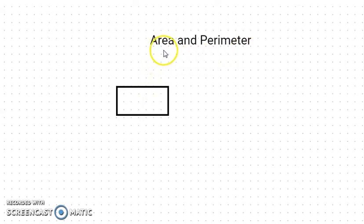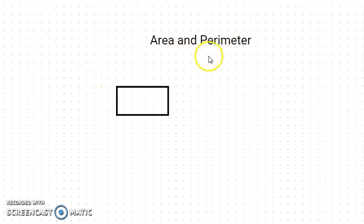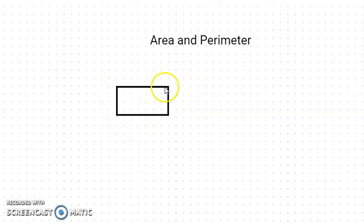Today, we will study area and perimeter. What is the difference between area and perimeter? Perimeter means the boundary length — the boundary length of a polygon.